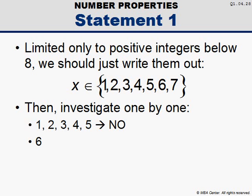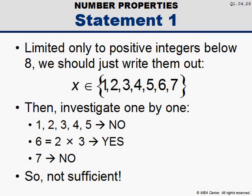What about 6? 6 is 2 times 3, so yes. What about 7? No. So, we have several possible values of x that would answer the question in the negative—no, we cannot. However, we also have a possible value of x, 6, that answers the question in the affirmative. Not knowing whether the answer is yes or no, we are forced to conclude that statement 1 is not sufficient to answer the question.